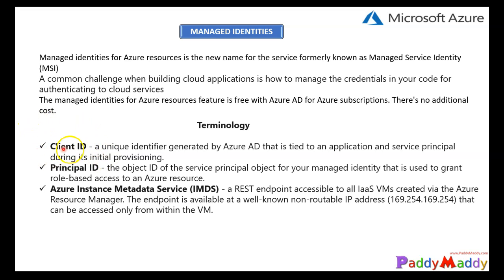Now let's talk about the terminology. The first one is the client ID. A client ID is a unique identifier generated by Azure AD, and it ties up with your application and your service principal during its provisioning. Coming back to the principal ID, when you enable managed identities, it generates the client ID and associates it with the service principal — that's what gets tied up.